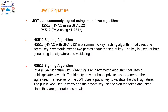All JWTs are signed using one of two algorithms. The first is HS512, which is a symmetric key hashing algorithm that uses one secret key. Symmetric means two parties share the secret key, and the key is used for both generating the signature and validating it. The disadvantage is that both parties use the same key.